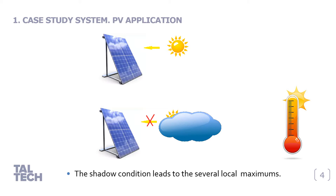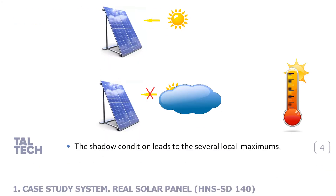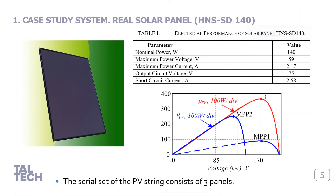That is why it requires a global MPPT algorithm that can detect all extremums of the power characteristics. These statements are well known, so let's move to specifics. If we take a real solar panel — for example, the model you can see on this slide — the maximum generated power will be around 140 watts. All other parameters of the single panel are listed in Table 1. The red line of the picture corresponds to the expected power characteristics of the string, but the blue line shows what could happen if the weather is cloudy. As a result, there are periods of local maximums, and who knows at which maximum point the MPPT algorithm will stop. Thus, global MPPT is implemented to find the most profitable point.